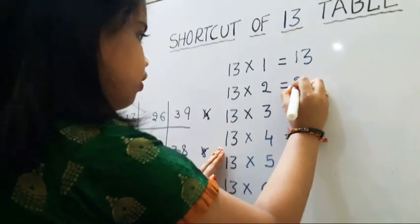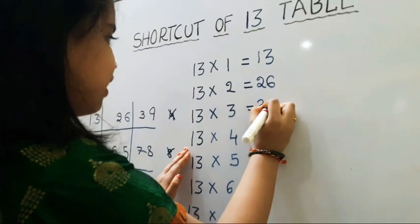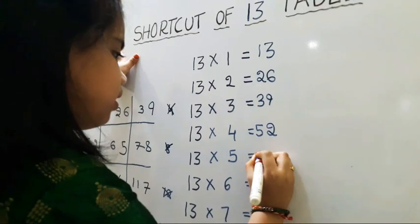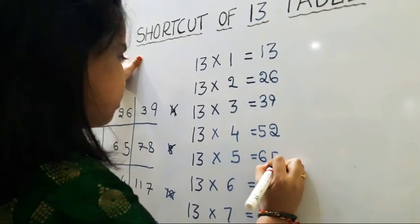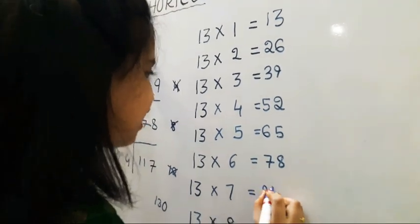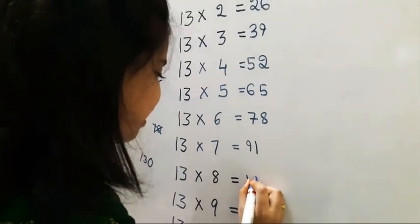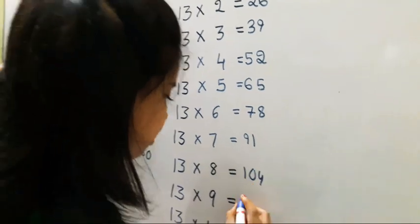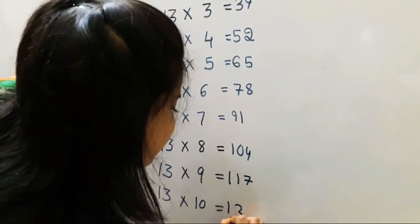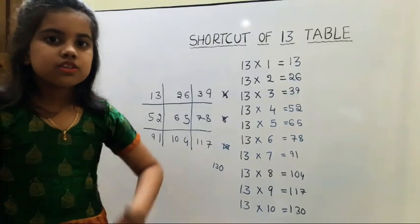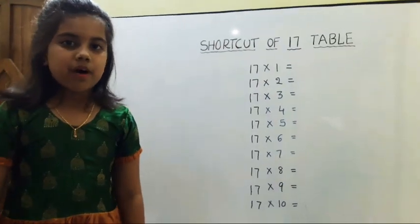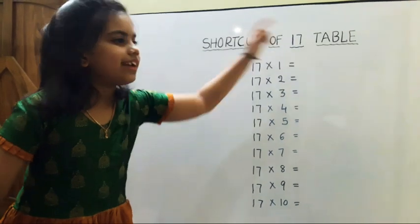13, 26, 39, 52, 65, 78, 91, 104, 117, 130. So this is the shortcut of 13 table. Next I am explaining about shortcut of 17 table.